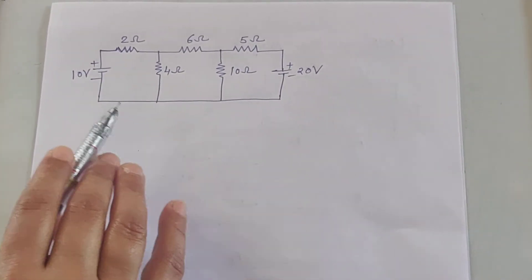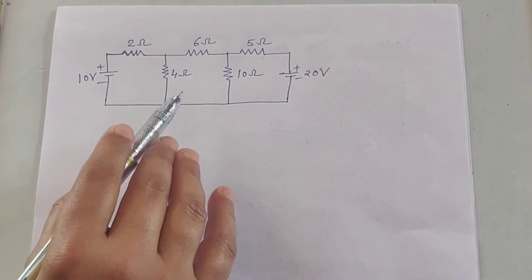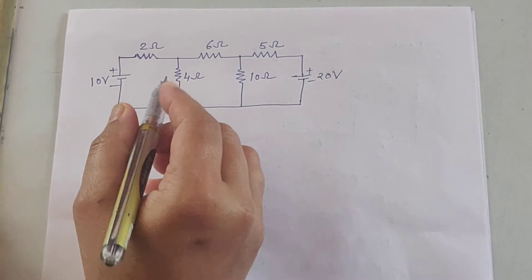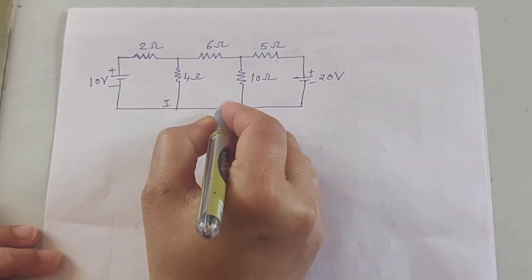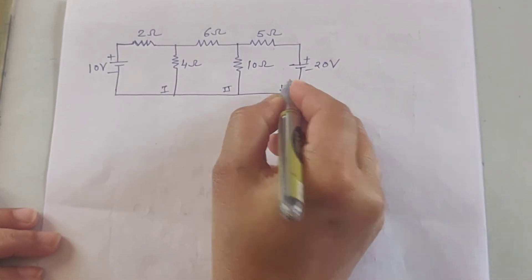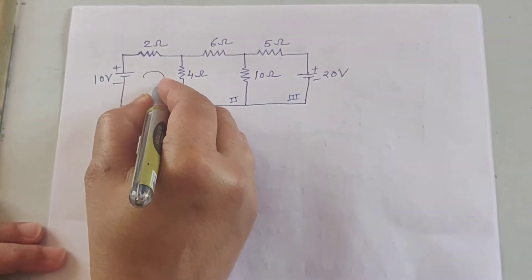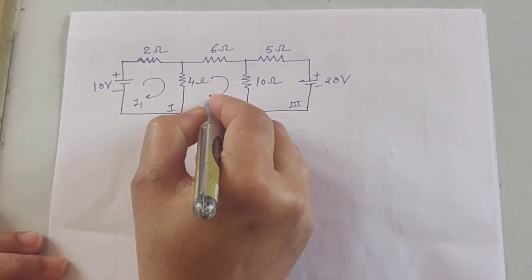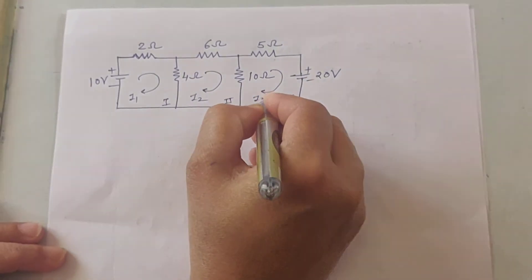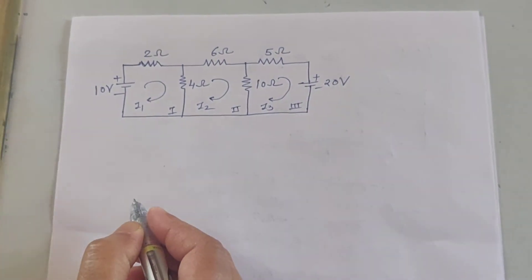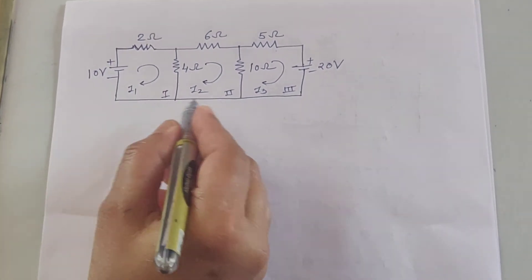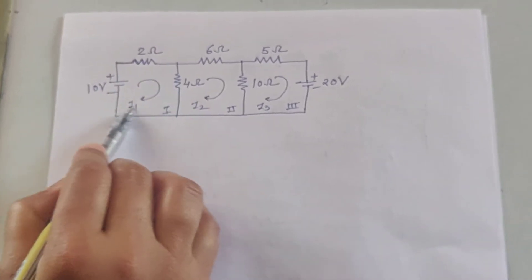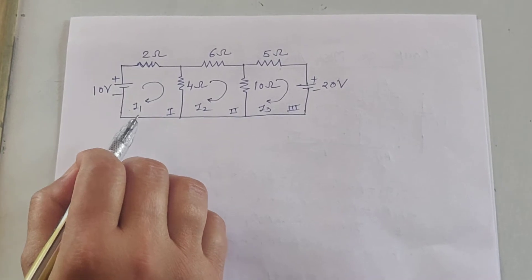First, mark the loops. There are three loops: this is the first loop, this is the second loop, and this is the third loop. Mark the loop currents: the first loop current is I1, the second is I2, and the third is I3. Then apply Kirchhoff's Voltage Law for these three loops.